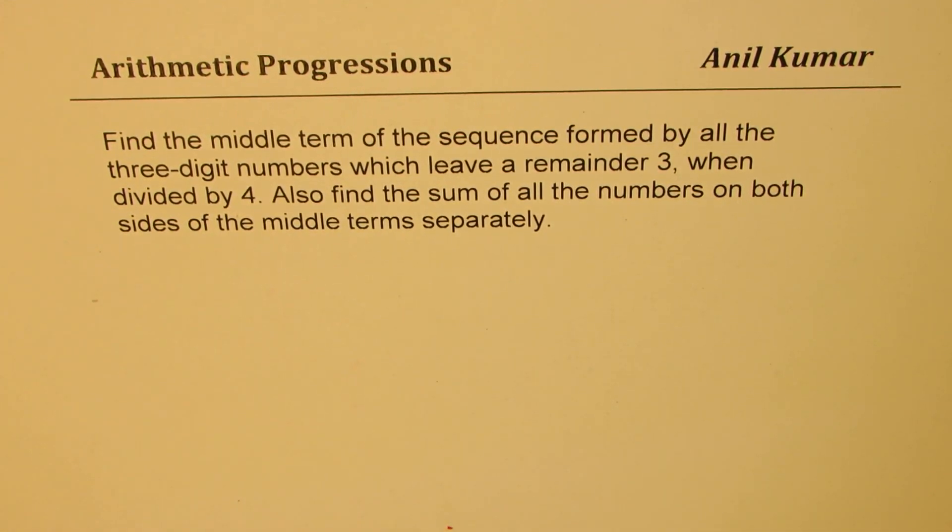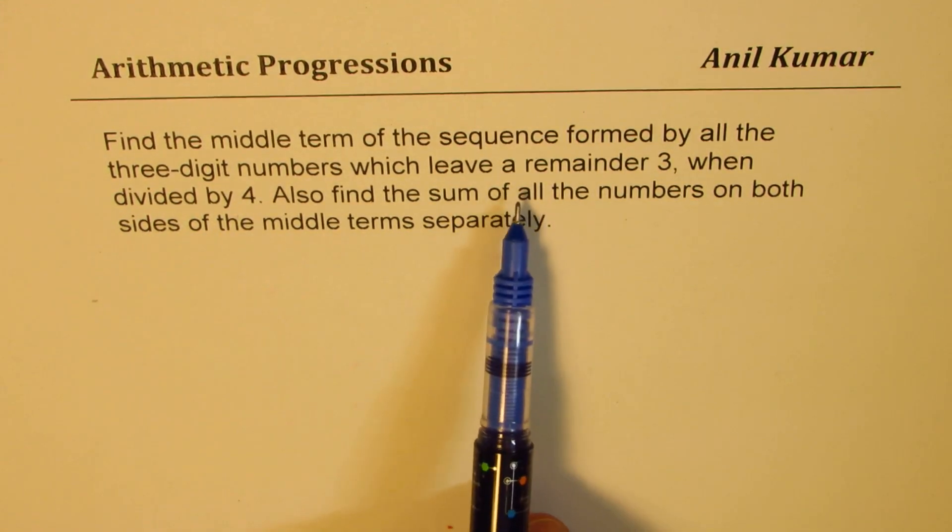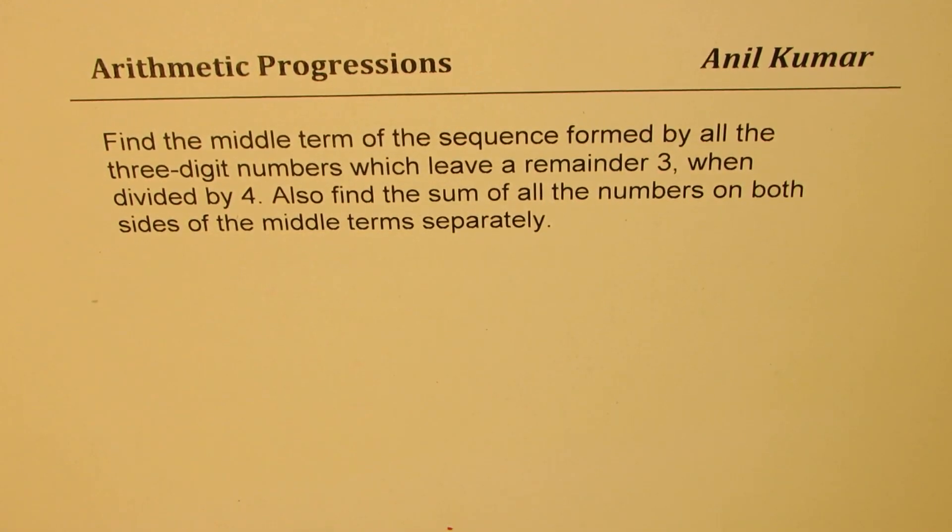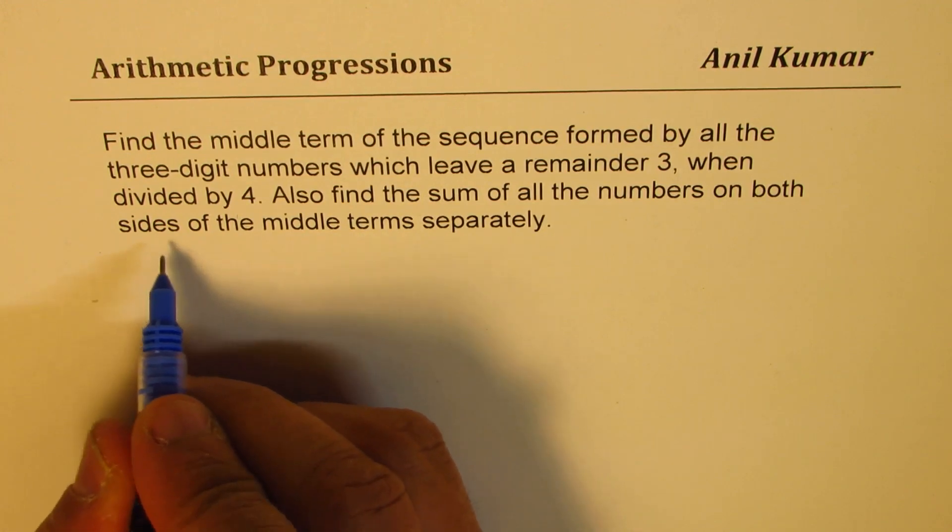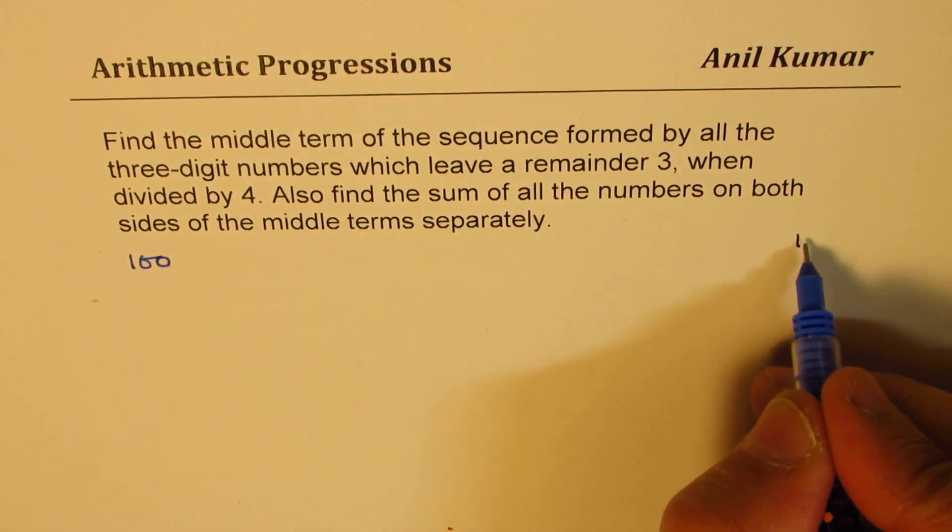So I hope you understand the question. We are looking for multiples of 4 which leave the remainder 3 and we are looking for three-digit numbers. So what could be these numbers? So these numbers are between 100 and 1000.